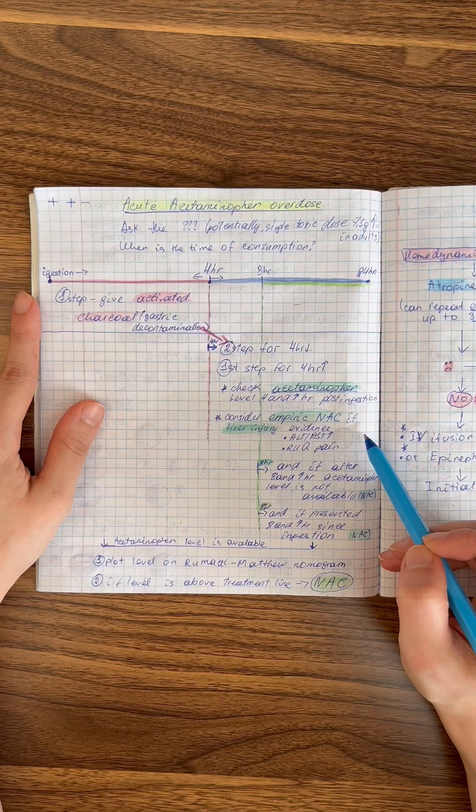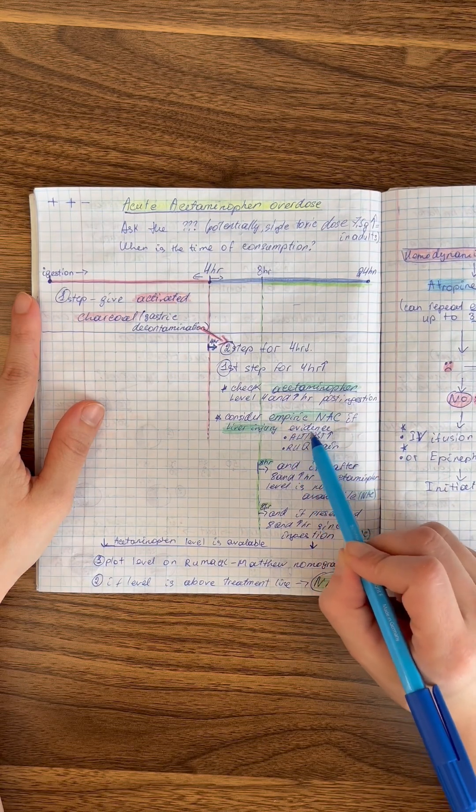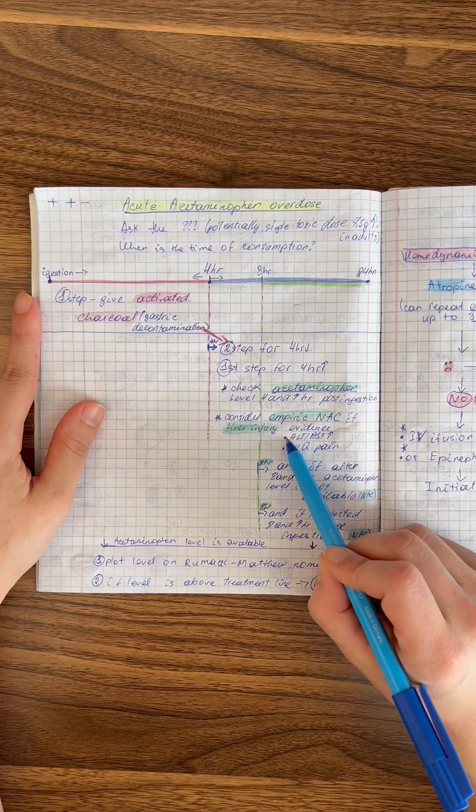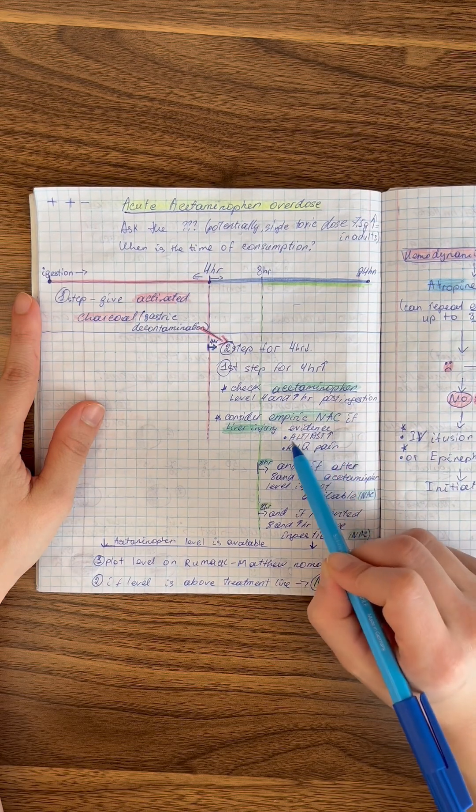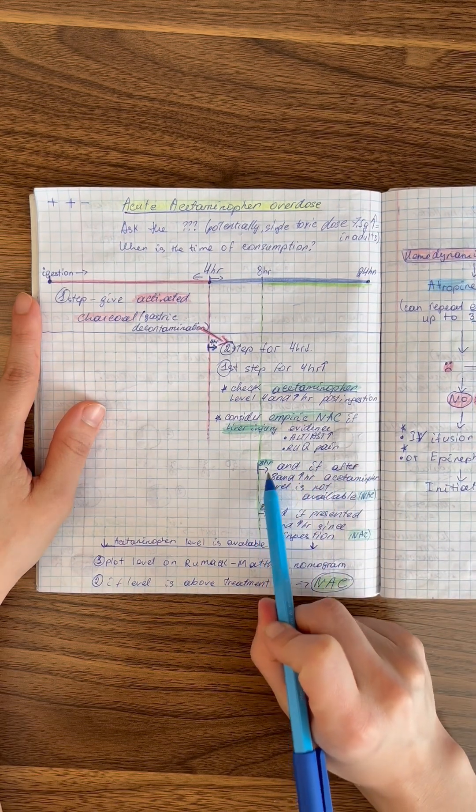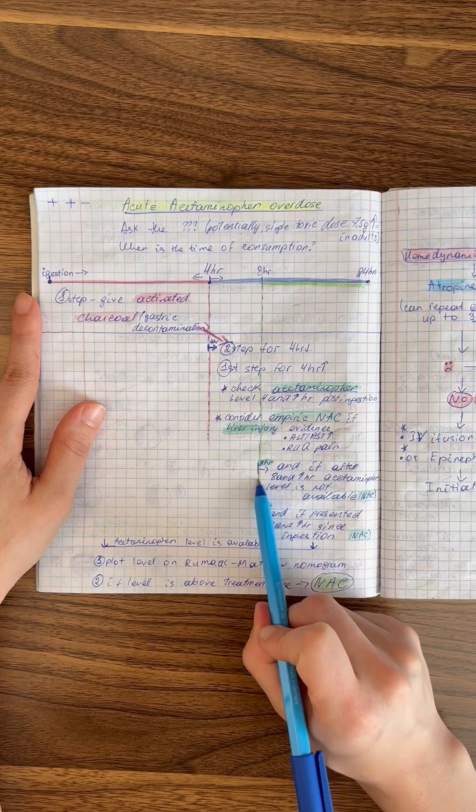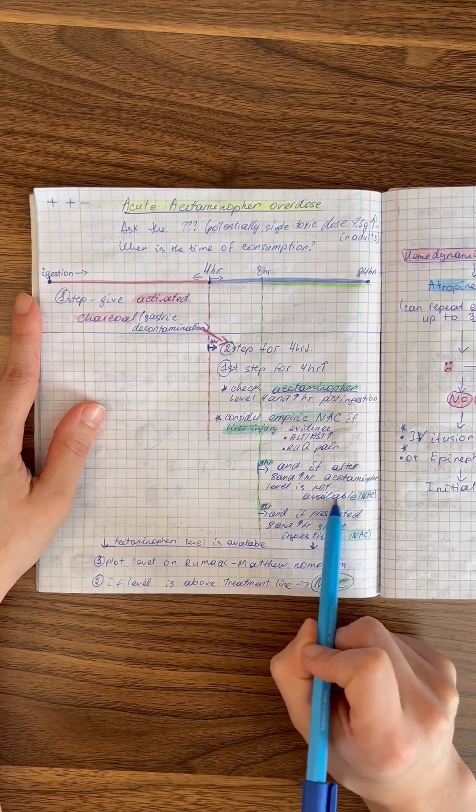NAC will be given empirically when there is any evidence of liver injury. We know that liver injuries are indicated by elevated ALT and AST and right upper quadrant tenderness. And we give NAC if patient presents after eight hours since ingestion or if acetaminophen levels are still not available after eight hours.